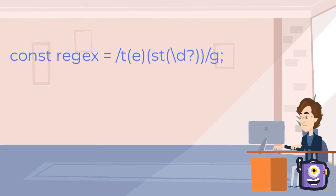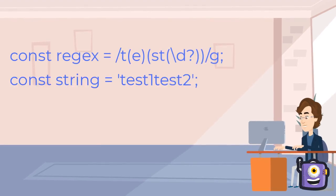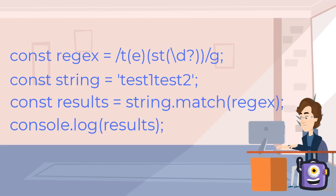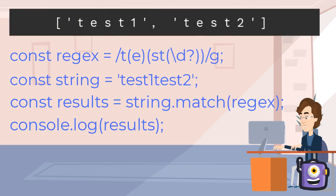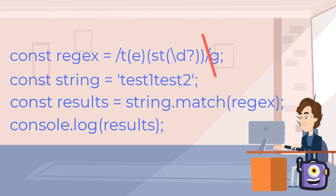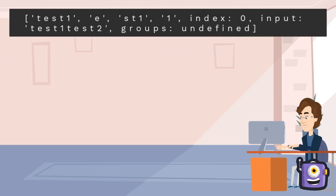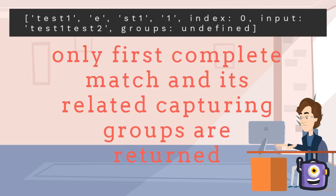We have a regex, a string test1 test2, and a results variable which will store the result of string.match(regex). Let's see the result in the console. We get an array of two strings, test1 and test2, which are the full matches of the given regex. Now we remove the global flag from the regex,